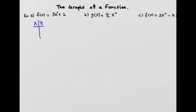One of the easy numbers to plug in for x is 0. So you get 3 times 0 plus 2, which is 0 plus 2, equals 2. So when x is 0, y will be 2. I can also use x equals 1, giving 3 plus 2 which is 5. So that's my second point: (1, 5).